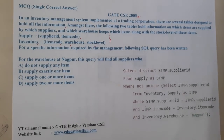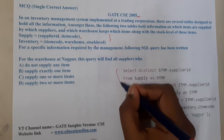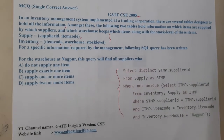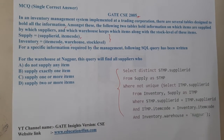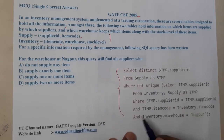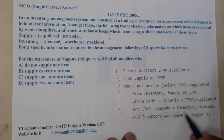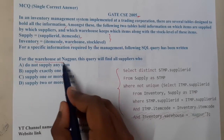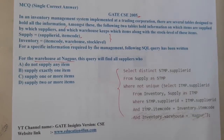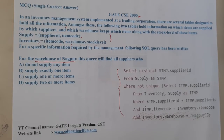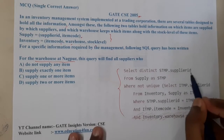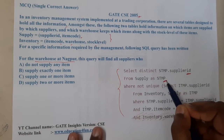For specific information required by the management, the following SQL query has been written. They are asking: for the warehouse at Nagpur, this query will find all suppliers who... I can clearly see in the last line that inventory warehouse equals Nagpur, so that condition is already written in the question. So now the query is finding supplier IDs from the supply table only.